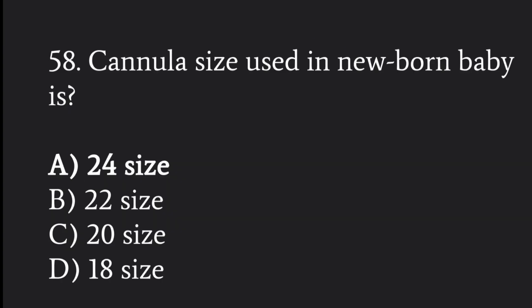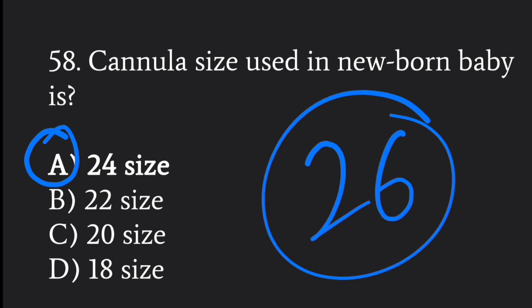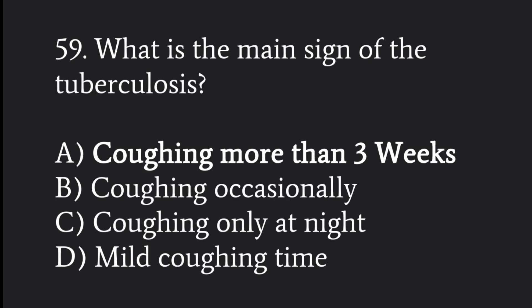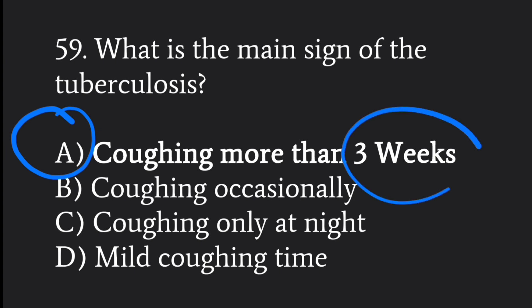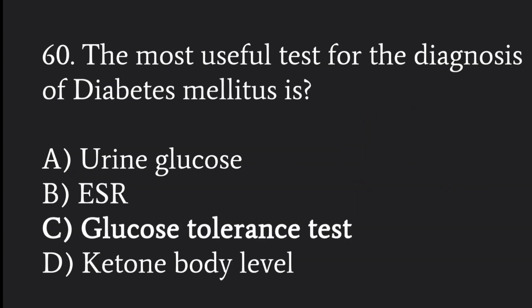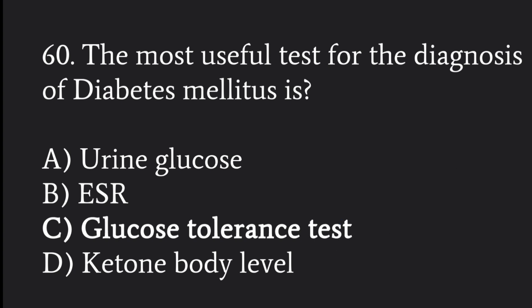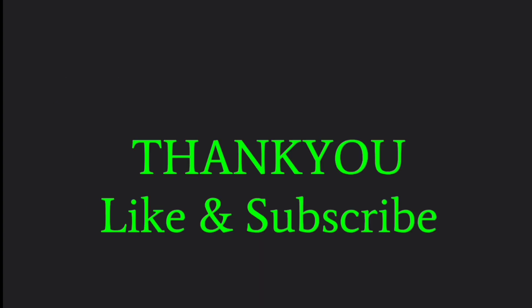Cannula sizes used in newborn babies are 24, and if option 26 is given, that is also a correct answer. The main sign of tuberculosis is cough for more than three weeks. The most useful test for diagnosis of diabetes mellitus is the glucose tolerance test. Thank you so much — like, subscribe, and share.